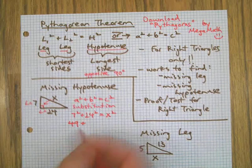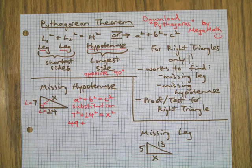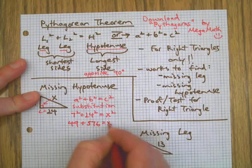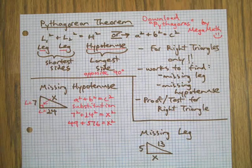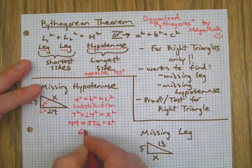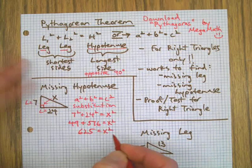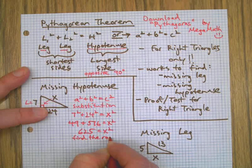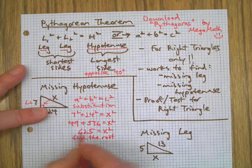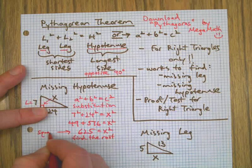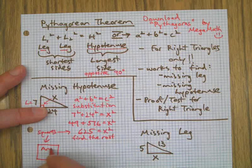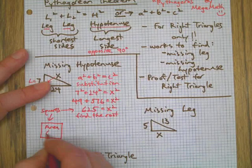7 squared is 49, 24 squared is 576. Now we're going to add 49 and 576 together. Then, we need to find the root. Both of these are squares. I need to find the root. What that means is, for example, I've got a square with an area of 625.